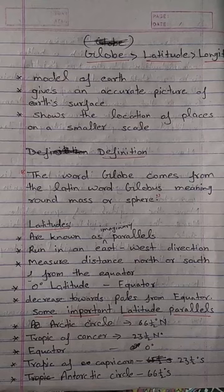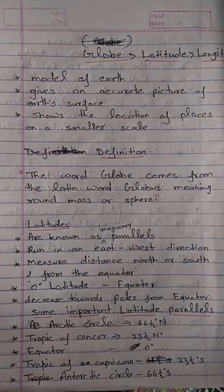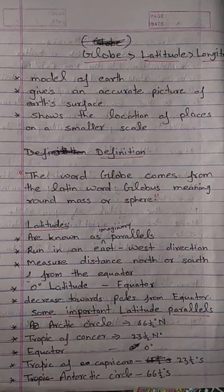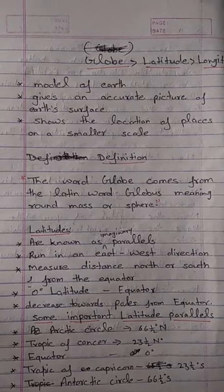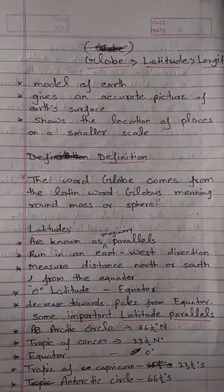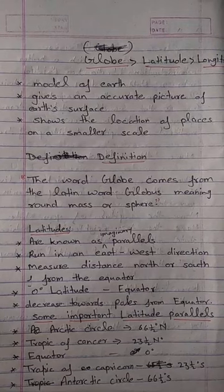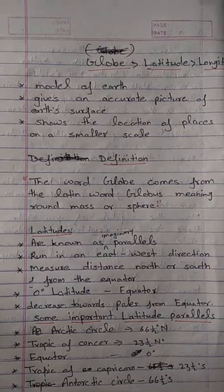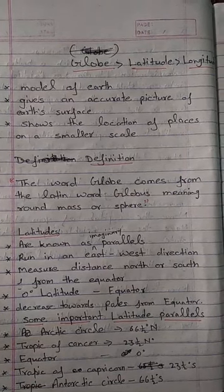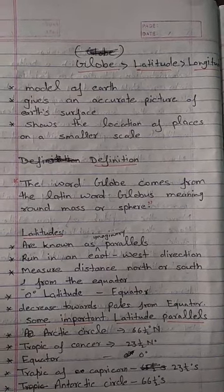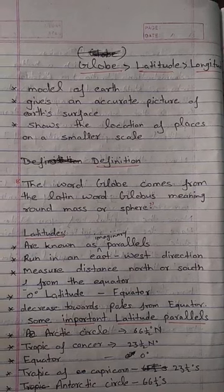Now, latitudes. Latitudes are known as imaginary parallel lines that run in an east to west direction and measure the distance north or south from the equator.